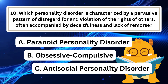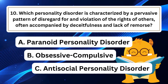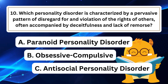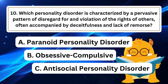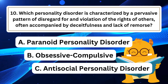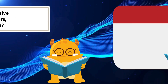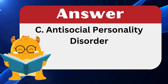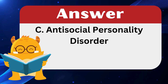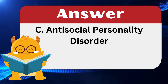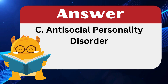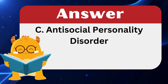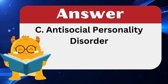Question 10: Which personality disorder is characterized by a pervasive pattern of disregard for and violation of the rights of others, often accompanied by deceitfulness and lack of remorse? The answer is C: Antisocial Personality Disorder. While most personality disorder names hint at their symptoms, "antisocial" here doesn't mean social withdrawal — it describes behavior that disregards others' rights and lacks empathy or remorse. Paranoid personality disorder involves distrust and suspicion, and OCD personality disorder involves perfectionism and control issues.